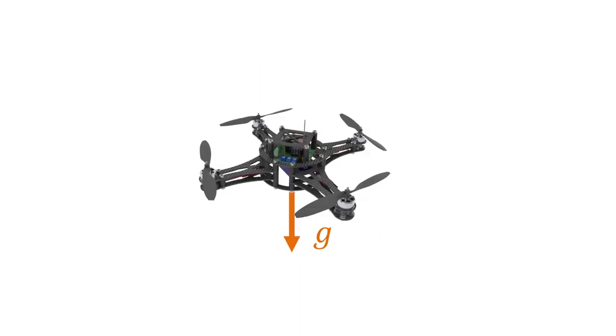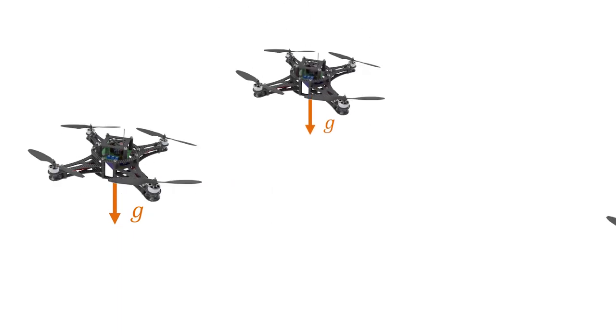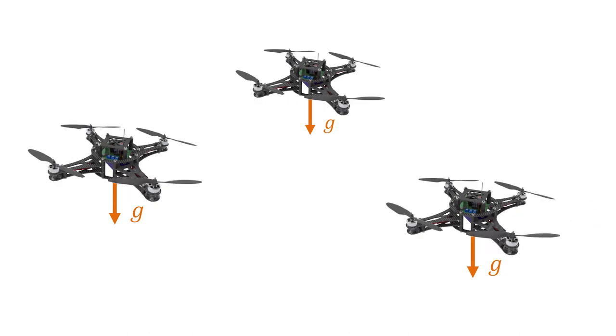Our approach can be applied to existing multi-rotor aerial platforms where the direction of gravitational force measured by an onboard IMU sensor can be used to align the local z-axis.